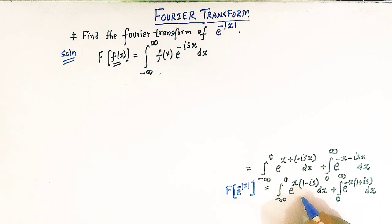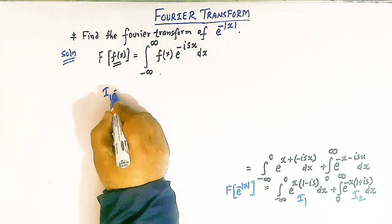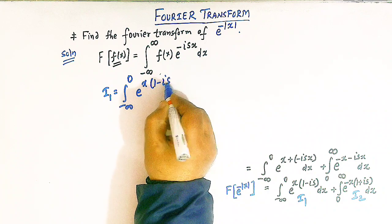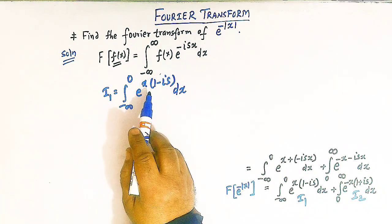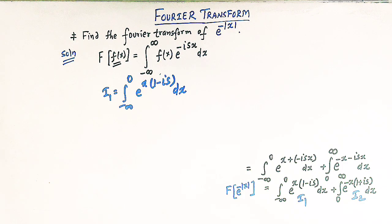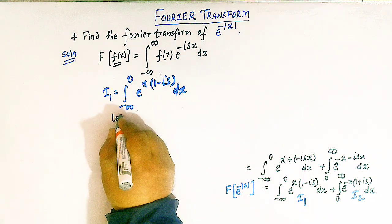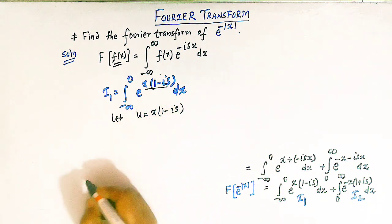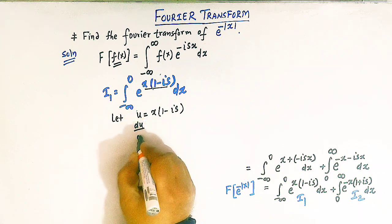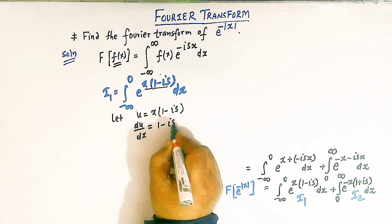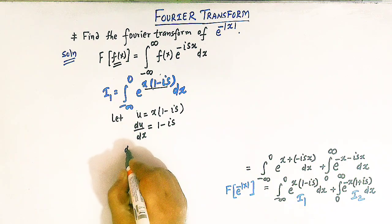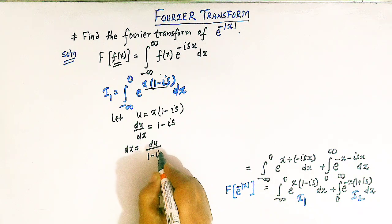Now let us solve these two integrals. Let us call the first integral I1 and the second I2. So I1 is from minus infinity to zero of e raised to x times (1 minus i s) dx. We will solve this integral by method of substitution. Let us take u equal to x times (1 minus i s). So du over dx equals 1 minus i s, and therefore dx can be written as du divided by (1 minus i s).